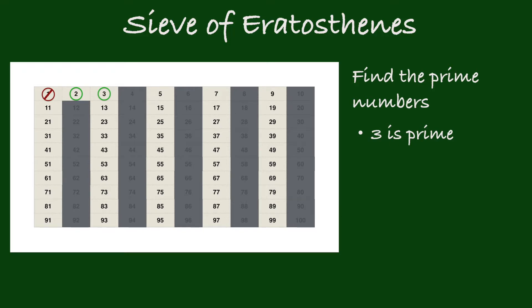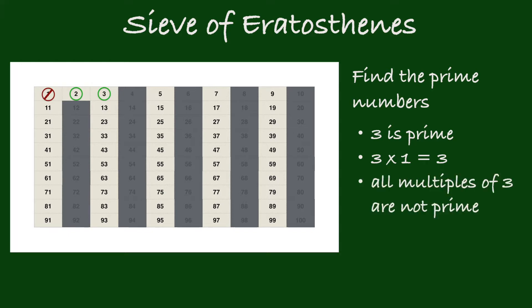The next unshaded number is 3. 3 is a prime because it is not a multiple of 2, so you can only get 3 by multiplying 3 times 1. Now all the multiples of 3 are not prime because, just like 6, it's not just 6 times 1 — you also have 3 times 2. Shade all the multiples of 3.